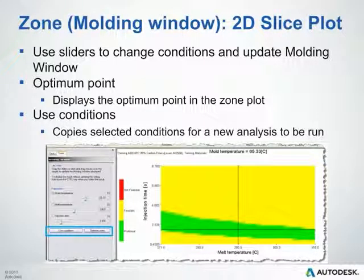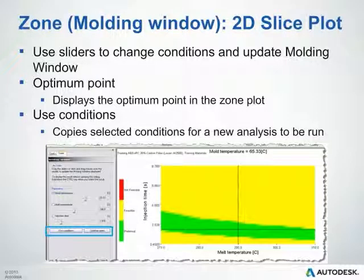A 2D slice plot is essentially a three-axes graph: we have mold temperature along one axis, melt temperature along another axis, and injection time along a third axis — think of it as a cube. What we're doing is slicing this along an axis, such as mold temperature. To slice it, simply click the button next to that result. You can use sliders to change the conditions and update the molding window on the fly.